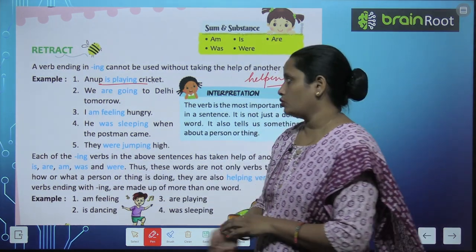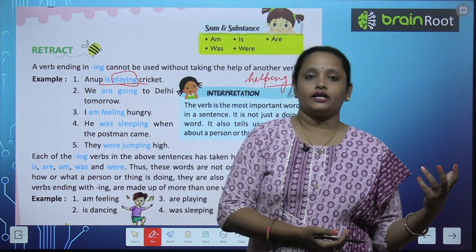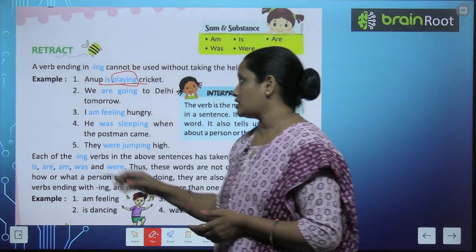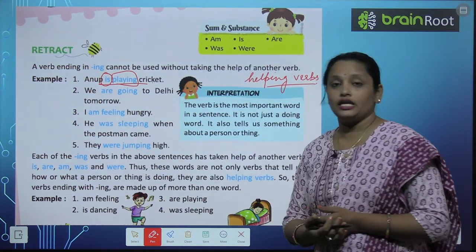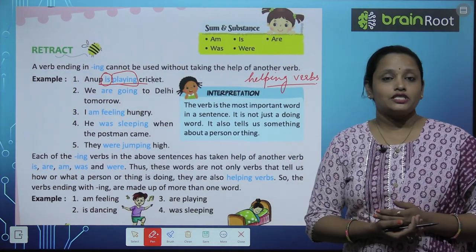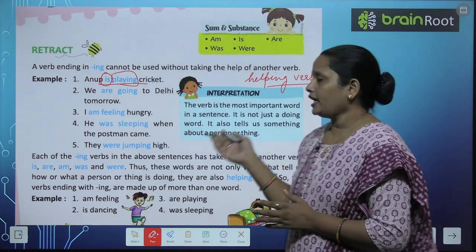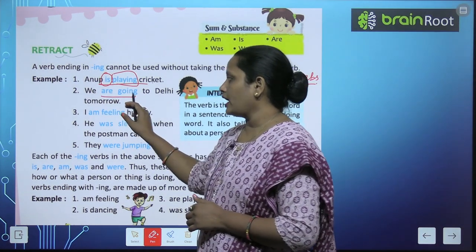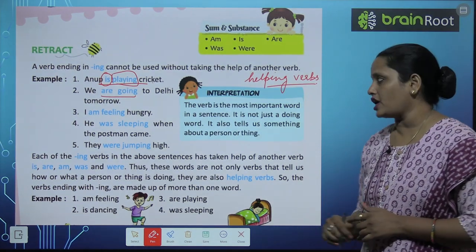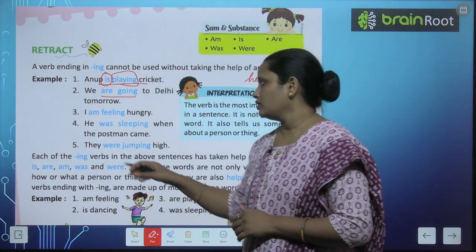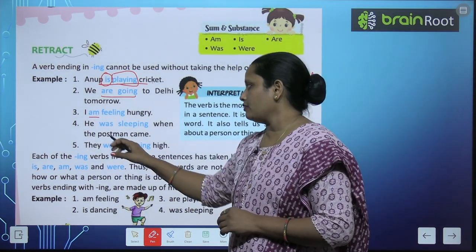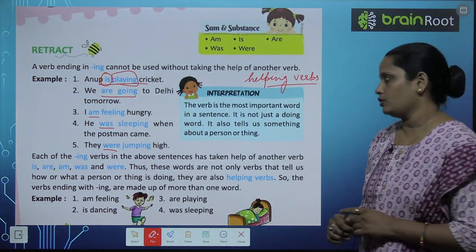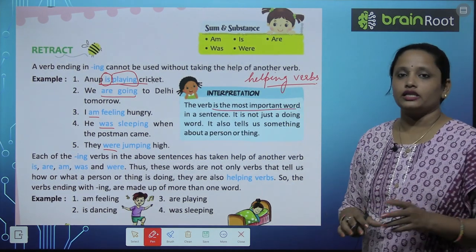Anoop is playing cricket. तो playing एक doing word है, उसमें -ing लगा दिया तो playing बन गया। Playing के साथ हमने लगाया 'is', जो की एक helping verb है — ये playing की help कर रहा है। तो sentence बन जाता है: Anoop is playing cricket. Next, 'we are going to Delhi tomorrow' — go का बन गया going, और are लगाके are going बना। Third: I am feeling hungry — यहाँपे am है helping verb. He was sleeping when the postman came — was है यहाँपे. And they were jumping high — were है यहाँपे helping verb.